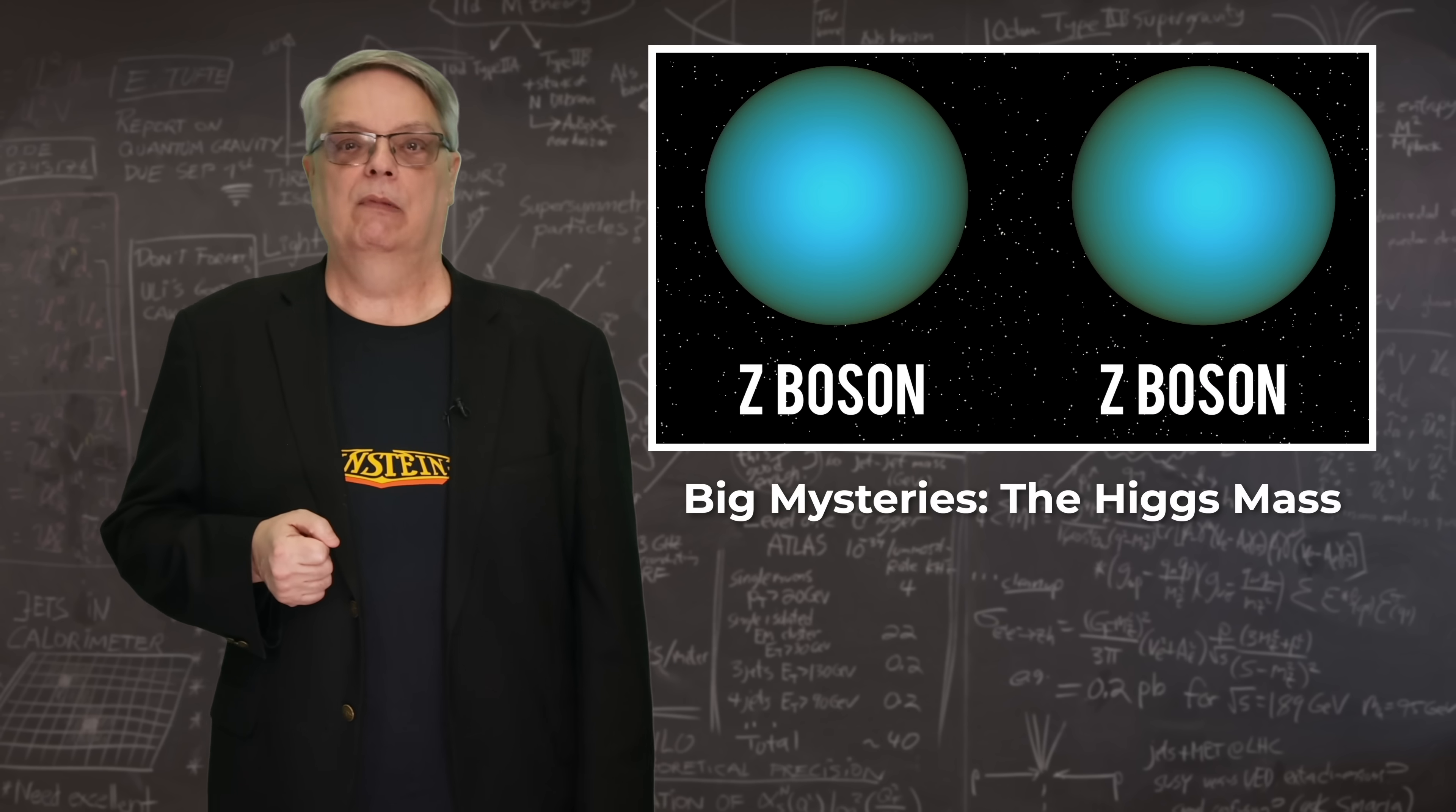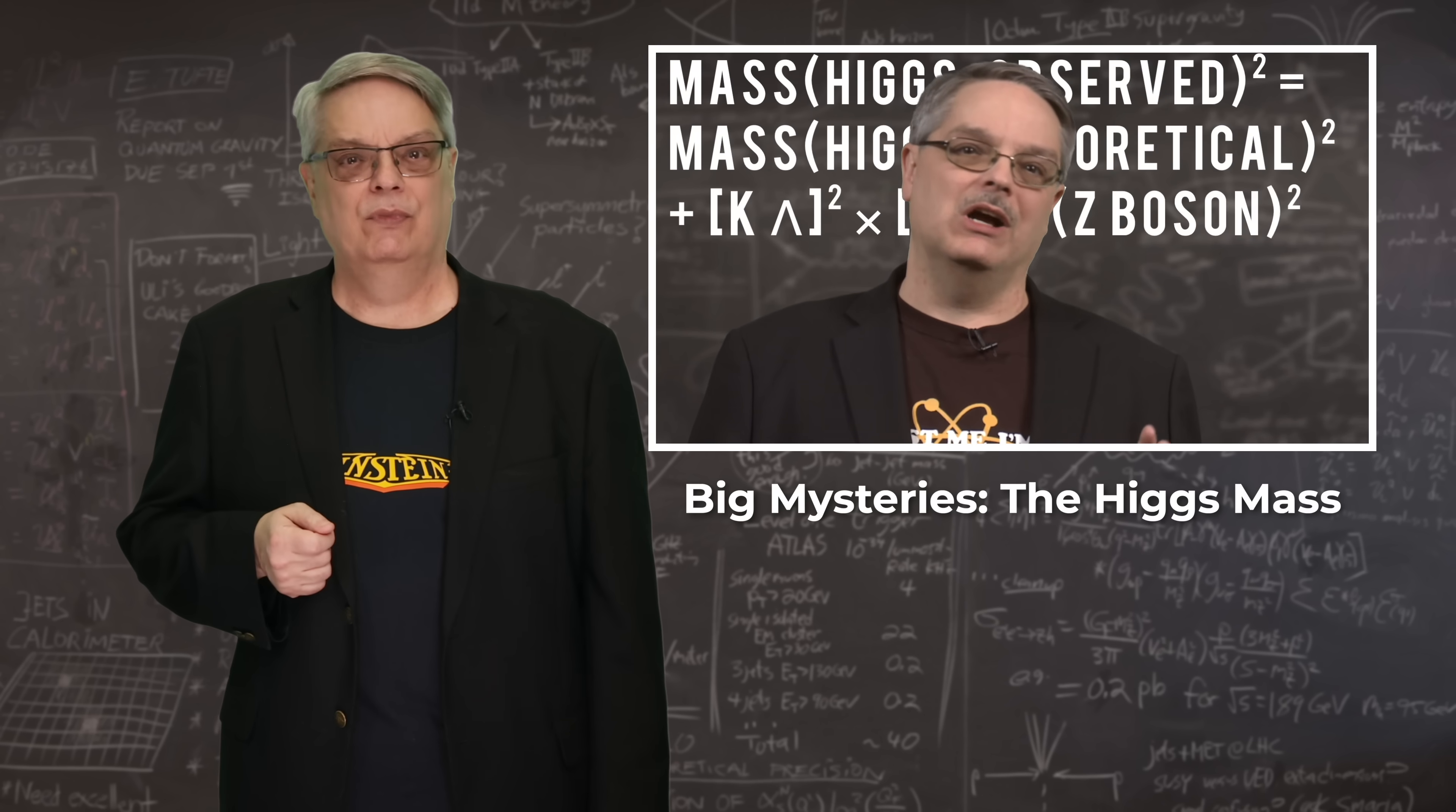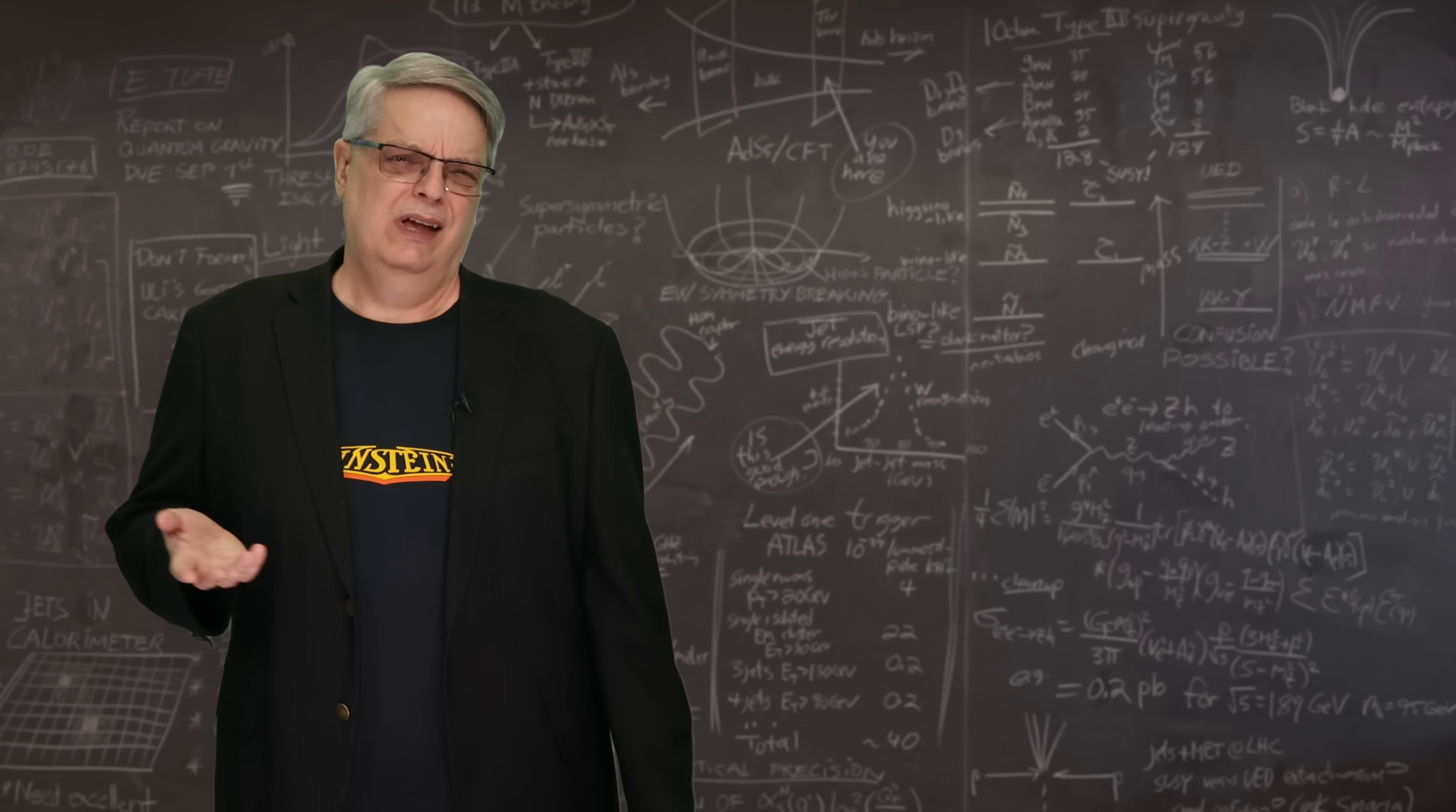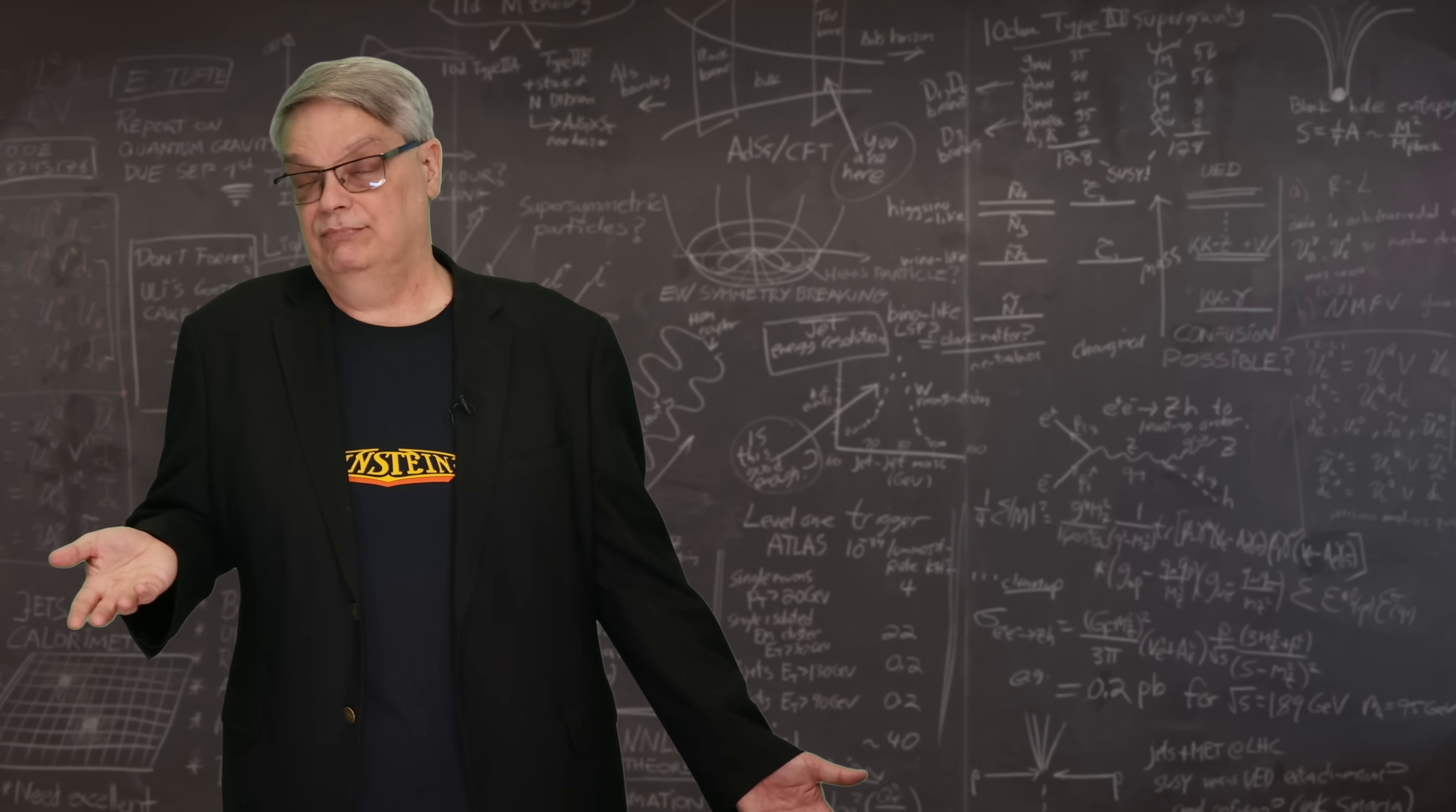However, there is a problem. The standard model predicts that the mass of the Higgs boson should be ginormous, but it's not. While we have some ideas as to why the prediction could be flawed, we have a fifth unanswered question. This is a technical point, but it shows that as successful as the standard model is, its answers are incomplete.